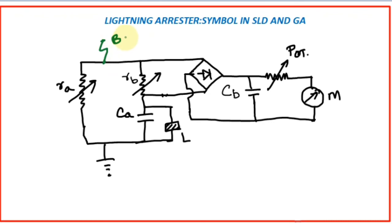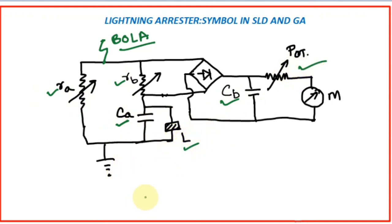This is the bottom of the lightning arrestor — I am writing it as DOLA. Here there are two variable resistors, capacitors, resistors, and two more capacitors. This is the potentiometer and this L is a counter coil. And this is the meter. By this circuit it measures the leakage current and indicates the reading.